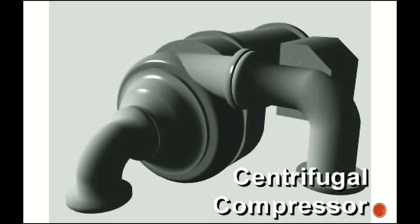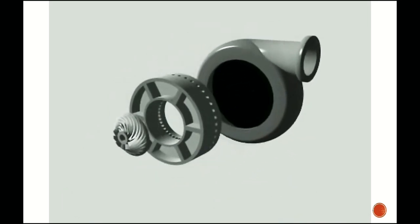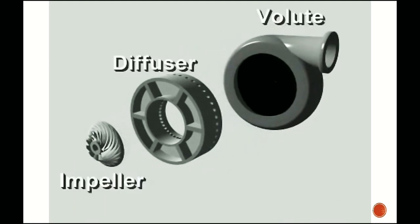The centrifugal compressor uses non-positive displacement vapor compression for compressing large amounts of refrigerant and is typically used in very large capacity cooling systems. A centrifugal compressor has three basic components: an impeller, a diffuser, and a volute casing. Large capacity centrifugal compressors may have two or more impellers or stages in the same casing.